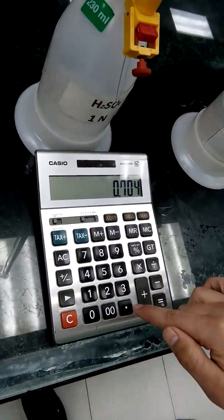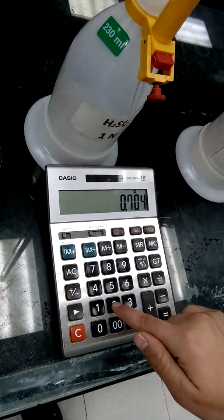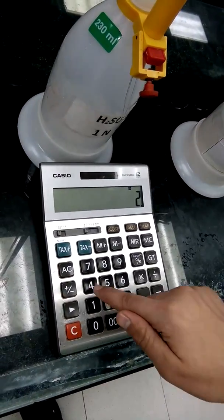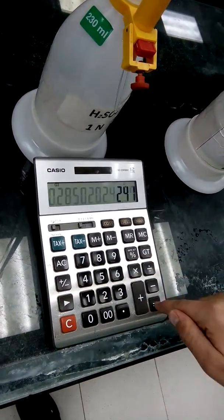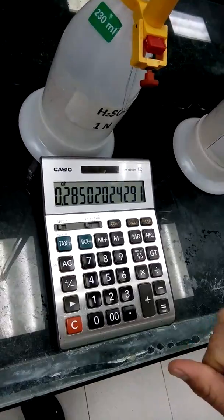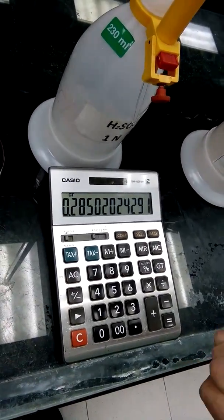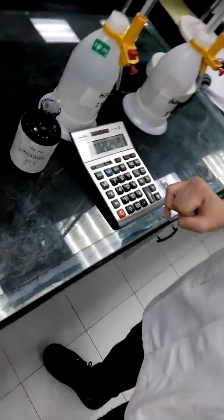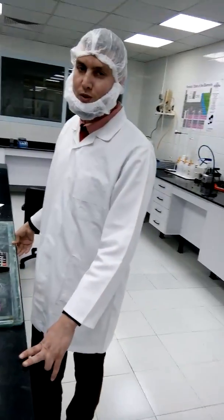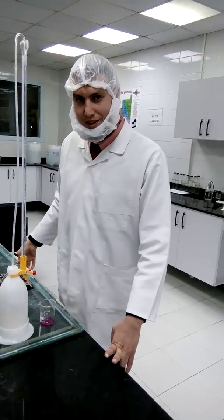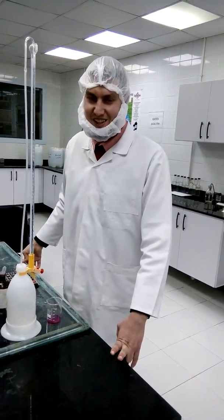Divided by the weight of the sample, which was 2.47, equals 0.28. So today we learned how to determine acidity in juices. Thank you.